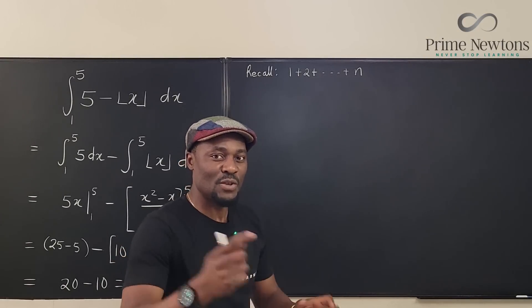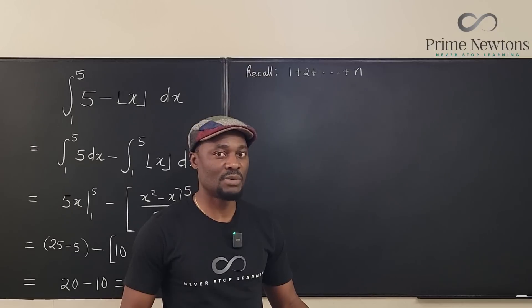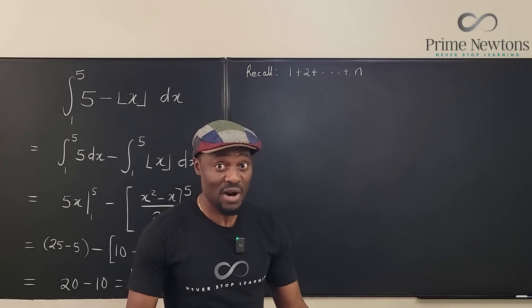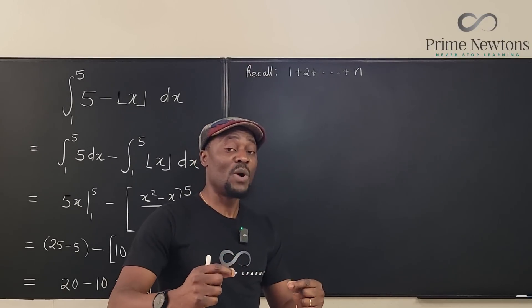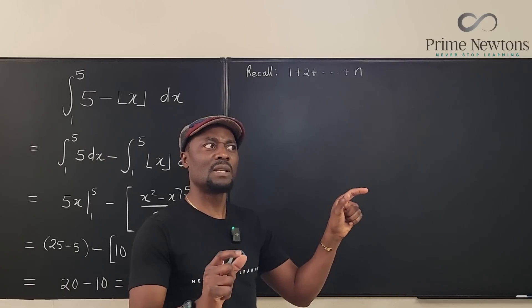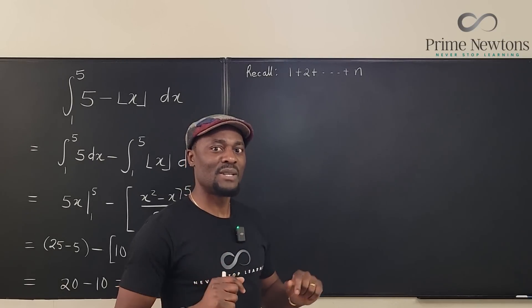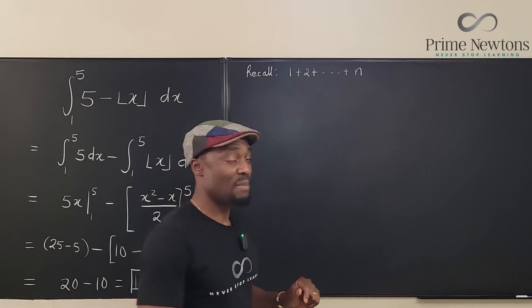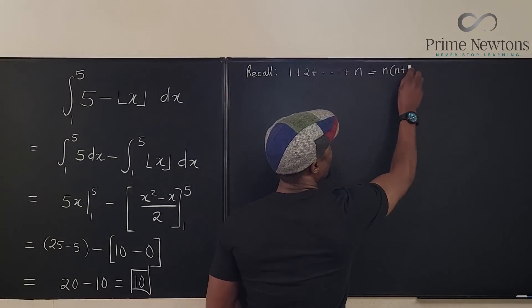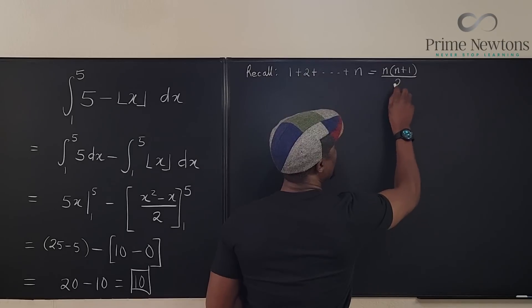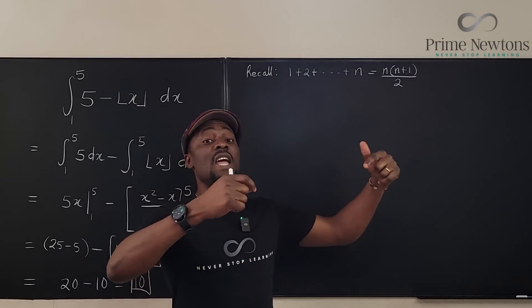The sum of the first n terms: for example, 1 plus 2 plus 3 up to 10 equals 55. How? Using the formula: it's n times (n + 1) divided by 2. For n = 10: 10 times 11 divided by 2 equals 55.